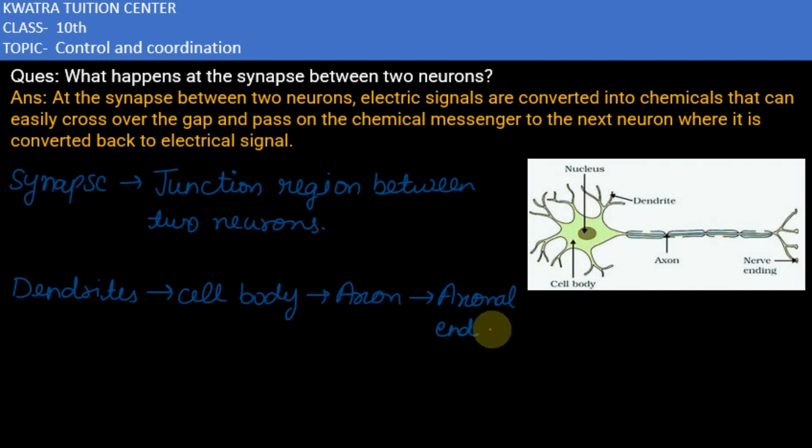And then this information is transferred to next neuron like this: first dendrites, then cell body, then axon, and then axonal end or nerve end.